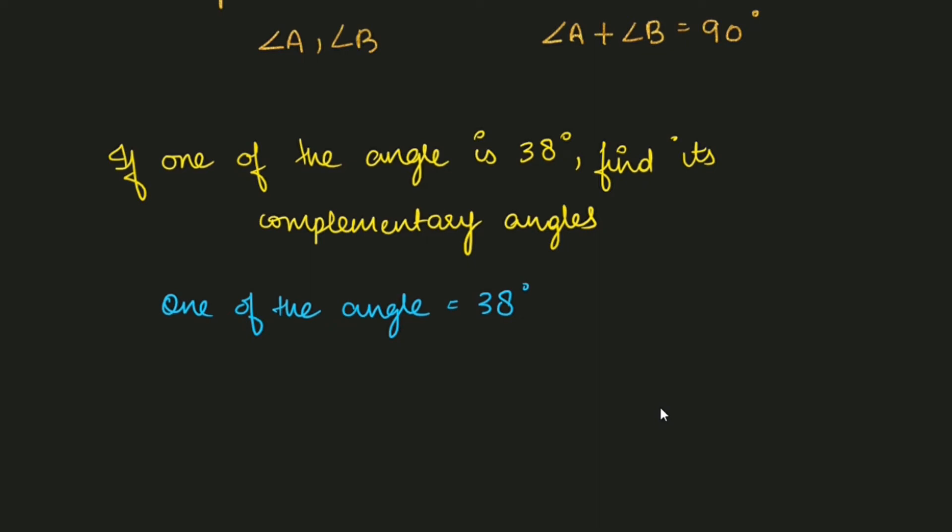Jo angle aapko find karna hai - here angle hona chahiye - jo dusara angle hai you don't know, aapko usi angle ko find karna hai. To let the other angle be x degrees. Jo dusara angle hai mujhe uske baare me nahi pata hai wo kya hoga, to abhi hamne usko x maan liya hai.